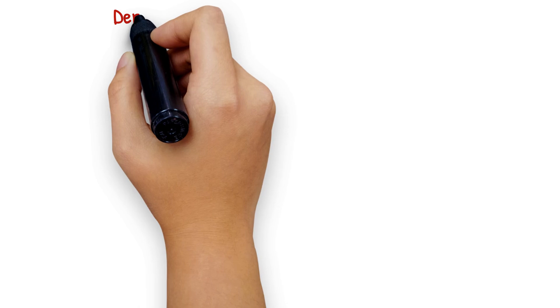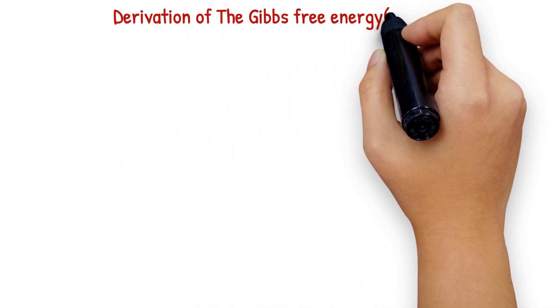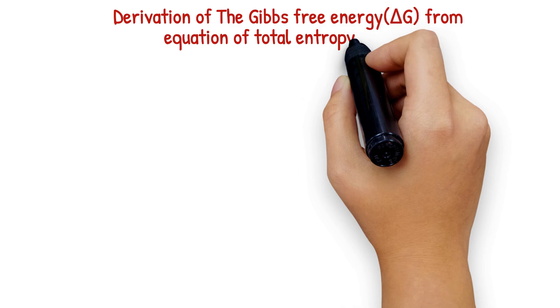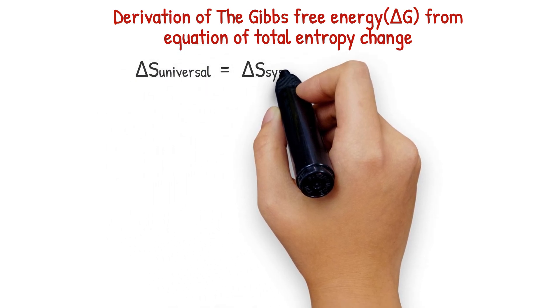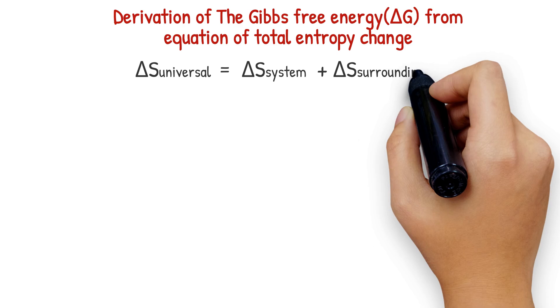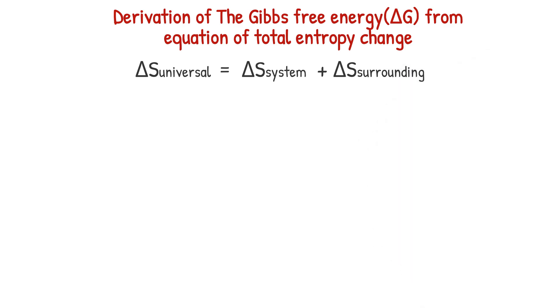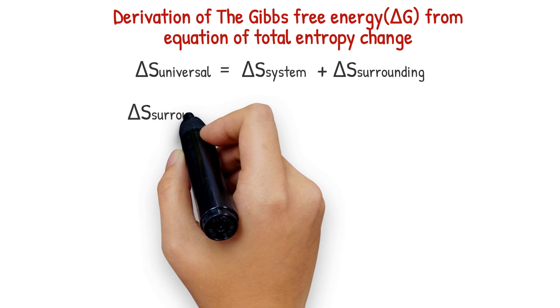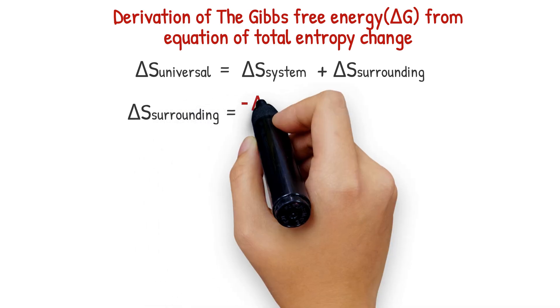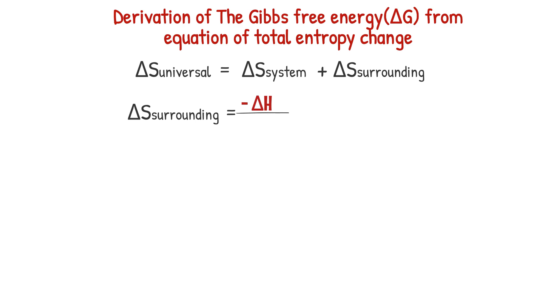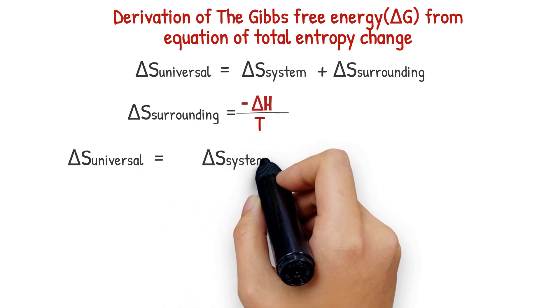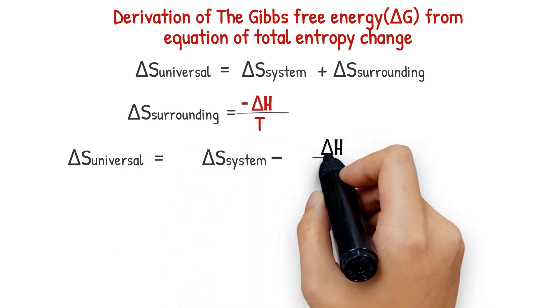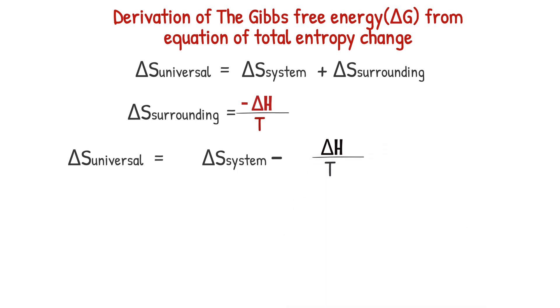Derivation of free energy from the equation of total entropy change. The total entropy change, also called the entropy change of the universe, is the sum of the entropy change of the system and the entropy change of the surroundings. The entropy change of the surroundings is equal to the negative enthalpy change of the reaction divided by the temperature of the surroundings in Kelvin. By substituting for entropy change of surroundings in the equation, you obtain the equation below.